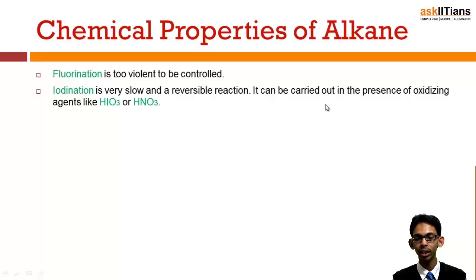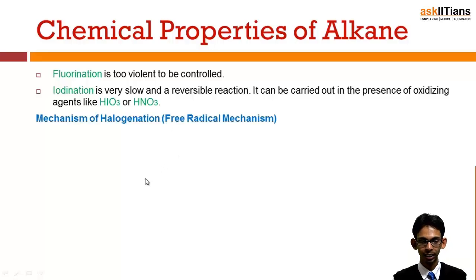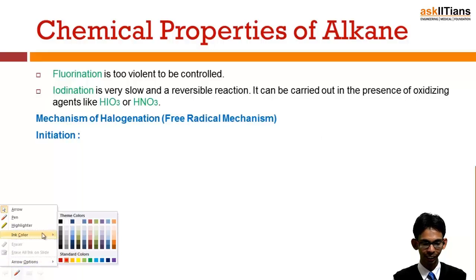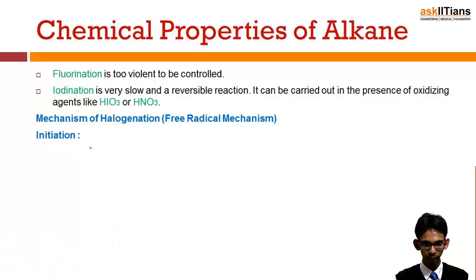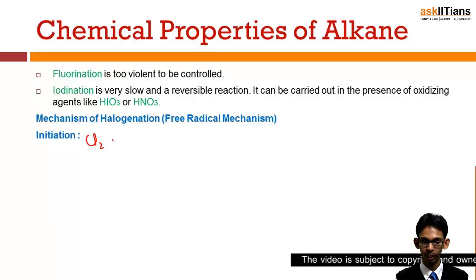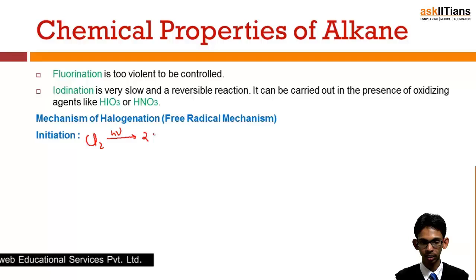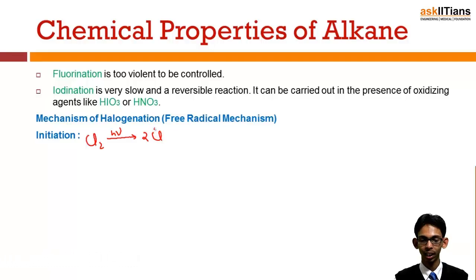The halogenation of alkanes proceeds by a free radical mechanism. The first step is chain initiation: chlorine reacts with sunlight, and homolytic cleavage of the bond takes place, generating two chlorine free radicals. This is the initiation step — where the reaction initiates.